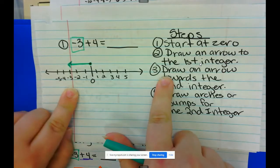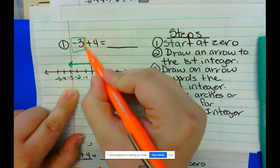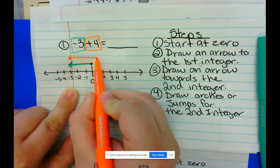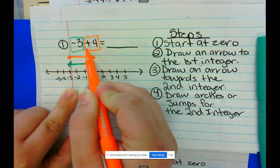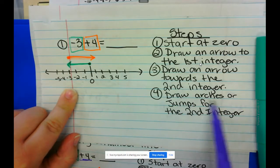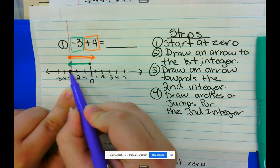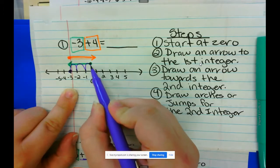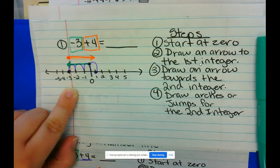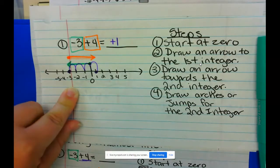Step 3 says to draw an arrow towards the second integer. My second integer is positive 4, so I'm going to draw an arrow from where I was at negative 3 in a positive direction. Step 4: draw the arches or jumps for the second integer. Since I was on negative 3, I'm going to jump 1, 2, 3, 4 times. Whatever it lands on is my final answer — positive 1.